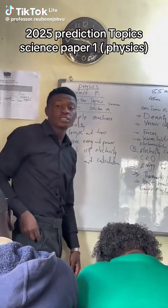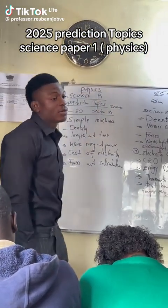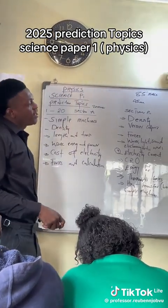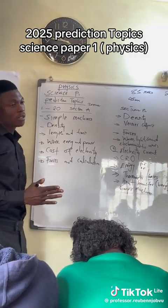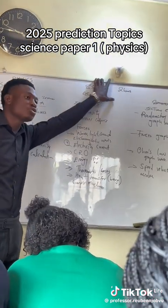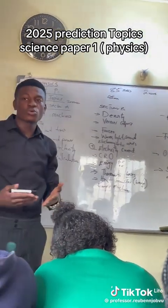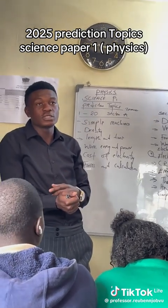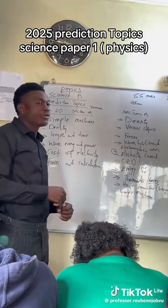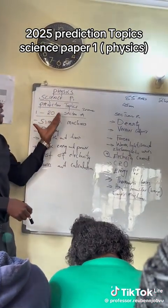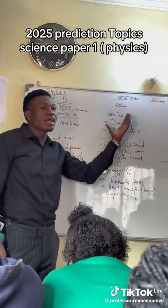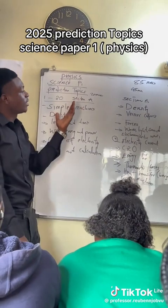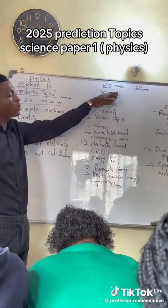For Science Paper 1, which is Physics, here's what to expect. Physics carries 85 marks and you're writing for two hours — sometimes two hours 30, two hours 45, or two hours 15. It has three sections: Section A, Section B, and Section C. You are supposed to finish all sections within the allotted time.